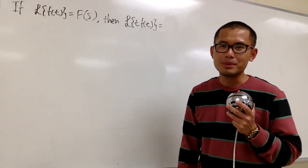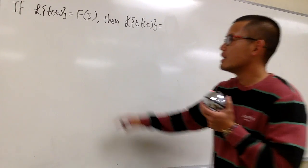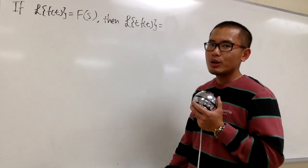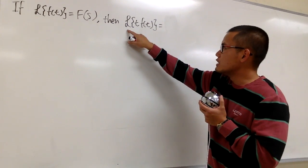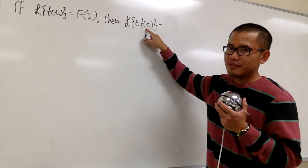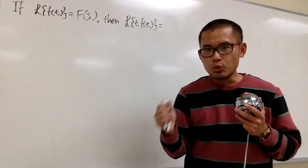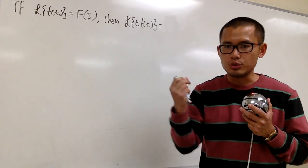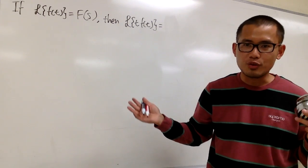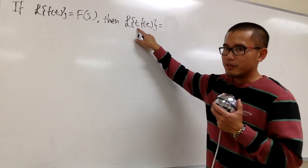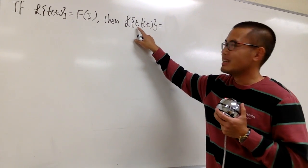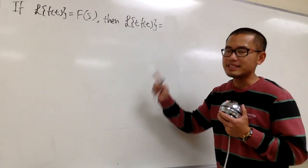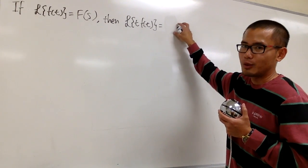This is going to be another really cool property of Laplace transforms. We are going to say that the Laplace transform of f is equal to F, and we are going to figure out what the Laplace transform of a product of t and f is. The Laplace transform of two general functions multiplied together doesn't have a formula, but if one of the functions is special enough — in this case, t multiplying with f — we do have a pretty nice formula.